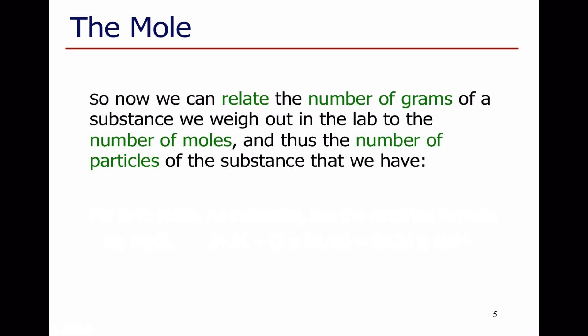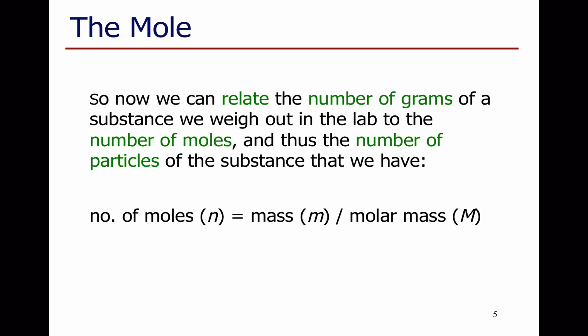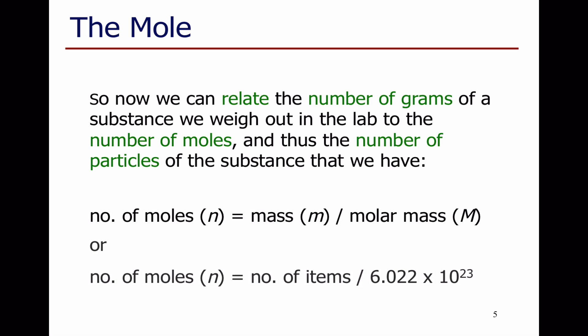Now we can relate the number of grams of a substance we weigh out to the number of moles, and to the number of particles of that substance that we have. The number of moles is the mass we have divided by the molar mass. Or, the number of moles is the number of items divided by Avogadro's number — 6.02 times 10 to the 23.